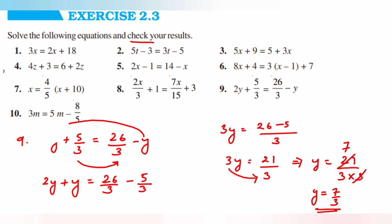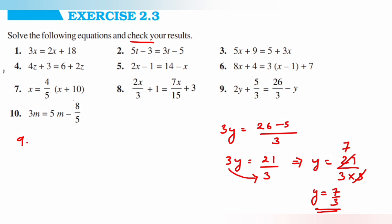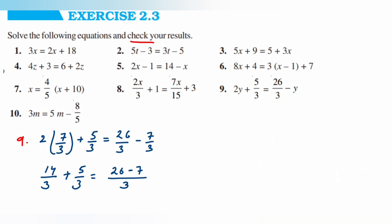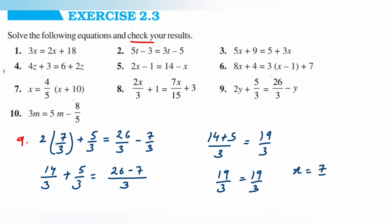Now we'll verify by substituting y is equal to 7 upon 3: 2 into 7 upon 3 plus 5 upon 3 is equal to 26 upon 3 minus 7 upon 3. This gives 14 upon 3 plus 5 upon 3 is equal to 19 upon 3. So 19 upon 3 is equal to 19 upon 3. LHS equals RHS, meaning y is equal to 7 upon 3 is the correct answer. Now the last question, the tenth one.